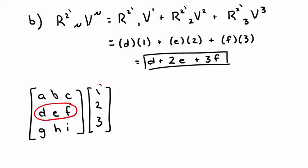Notice that this result is consistent with what we would get if we used matrix multiplication. The 2 in R2' mu tells us we want the second element of the resulting vector, which linear algebra tells us is equal to D plus 2E plus 3F. So far, the math is looking good.